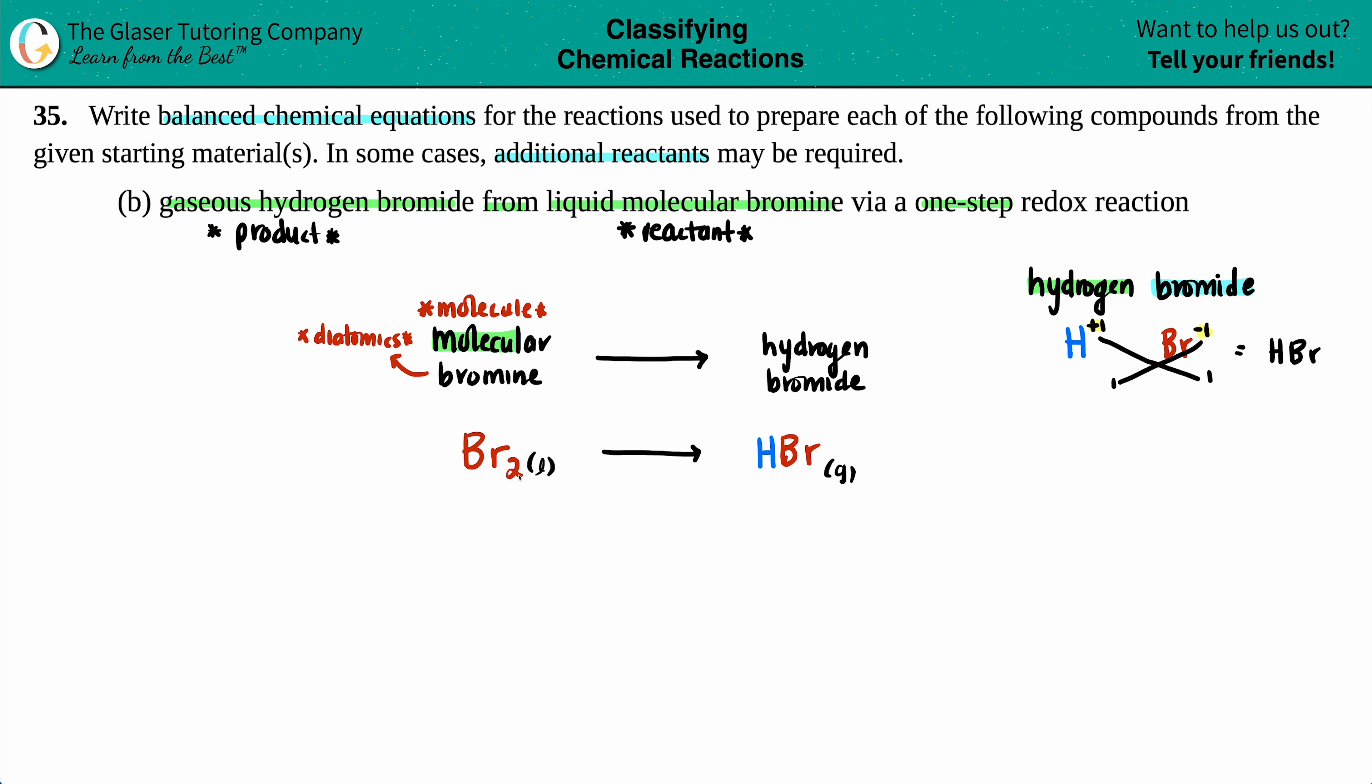But now seems like we have a little bit of a problem, because remember when you're writing equations, the elements that are on the left-hand side have to equal the elements on the right-hand side. So I got bromine covered, I got bromine for both the left and the right side. But I only have hydrogen on the right side. But that's okay because they did give us a heads up. They said additional reactants may be required, and a reactant is the left side.